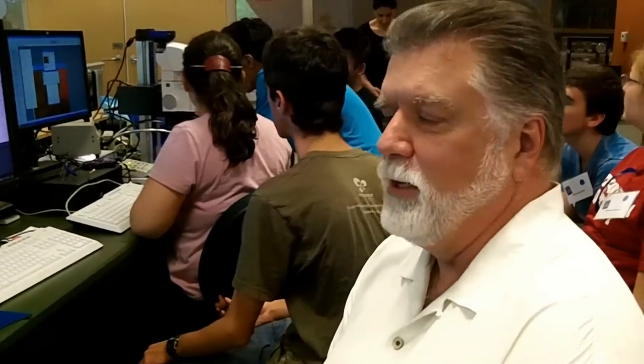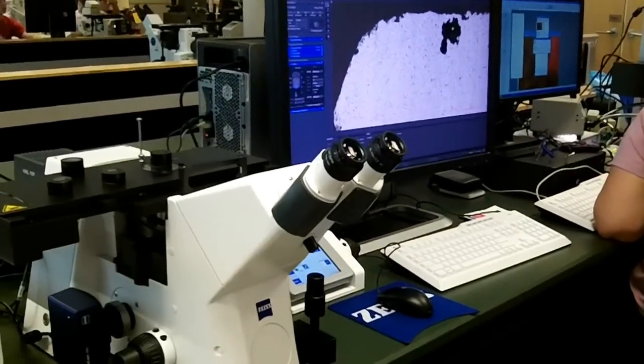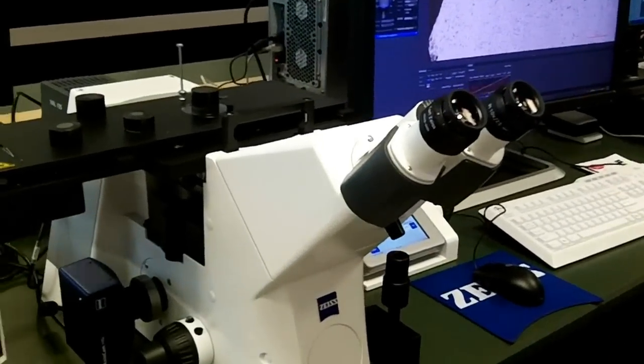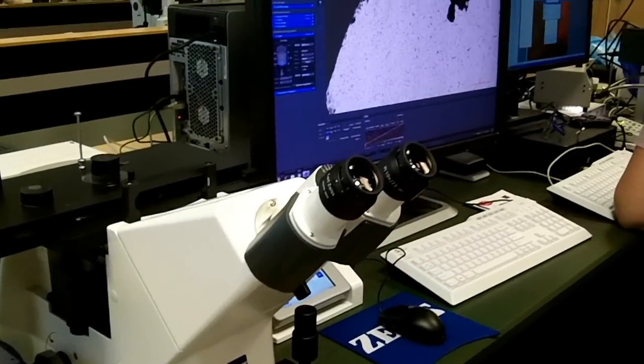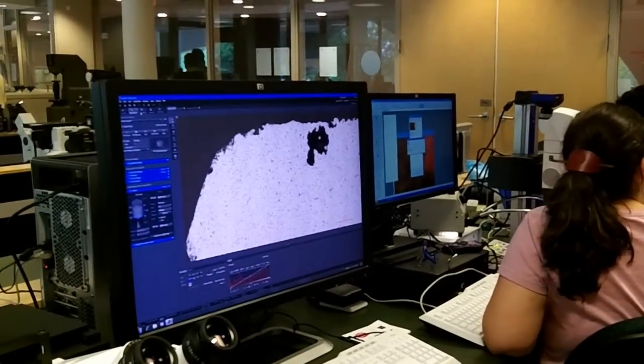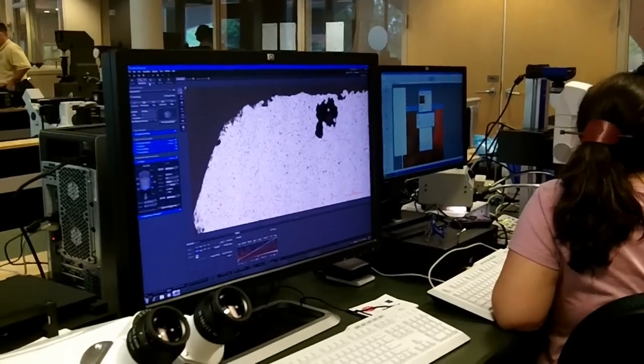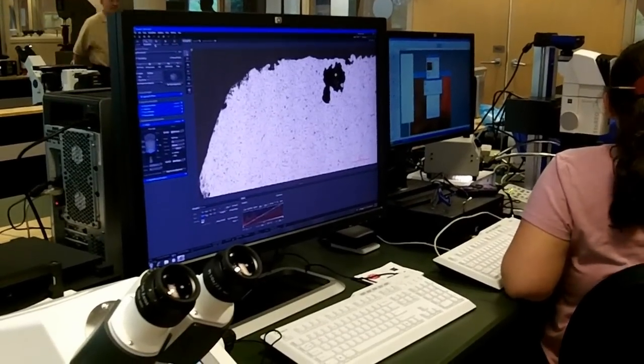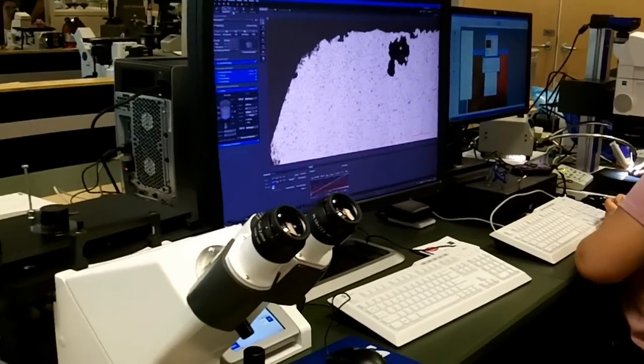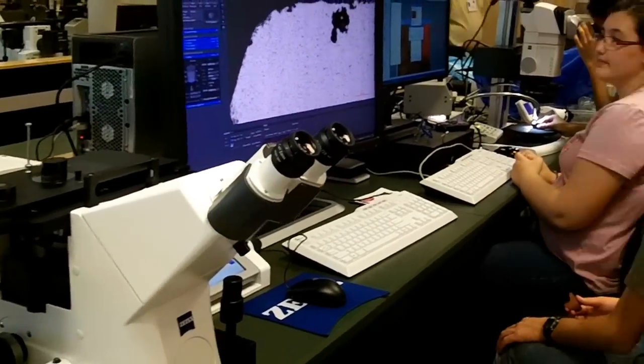Good afternoon. I'm Tom Henderson, and today we have our Axio Observer Z1, which is an inverted automated metallogram, and our AxioCam HRC color camera with our image analysis program called ZEN. Today what we're going to do is be looking at the microstructures of different samples so the students can identify where the failures are coming from.